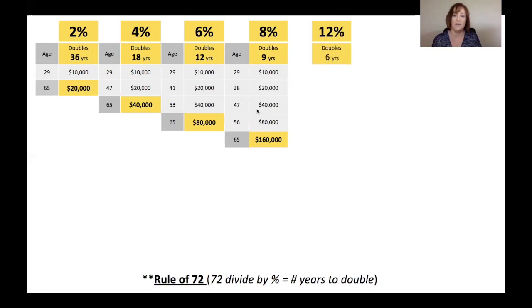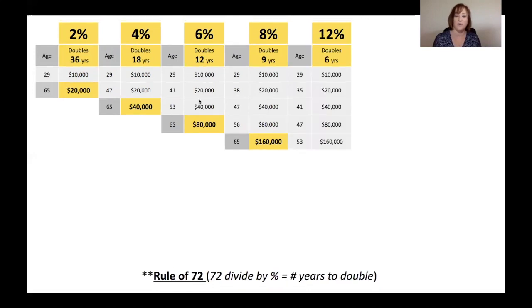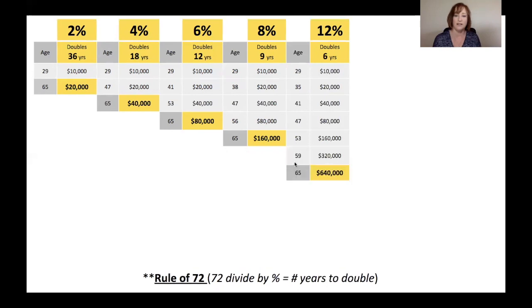At 12%, your money doubles every 6 years. By age 53, $160,000. So you see how much better off you are. So every 6 years, you have $320,000. By age 65, $640,000. So by age 29, you're able to put $10,000 away into something at 12%. Never touch it. Don't do anything. Don't take any money out of it. Just keep reinvesting the interest automatically. Never add to it. Never remove anything. By age 65, you've got $640,000.